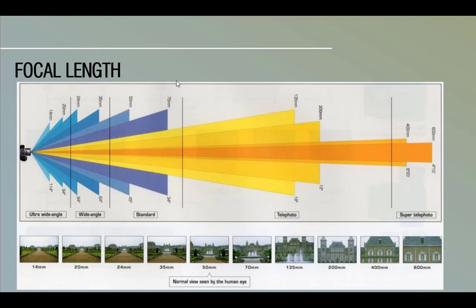The focal length is basically the distance between the lens glass and the film or sensor inside a camera. Short distances are referred to as wide-angle lenses because of their angle of view. So the shorter the focal length, the wider the field of view and the wider the angle. Short focal length will affect the field of view angle significantly.